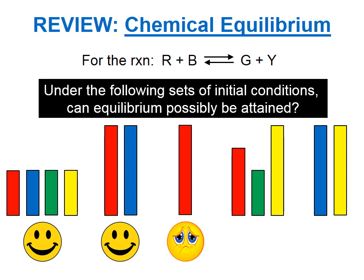How about this next case? We're going to start with some red, some green, and some yellow. The only thing that's missing is some blue, and we could make some blue because we have green and yellow. This reaction can run backwards to produce some blue, so that is a case where we could also reach equilibrium.